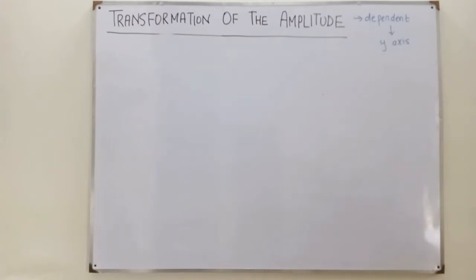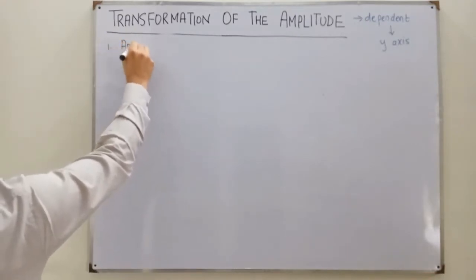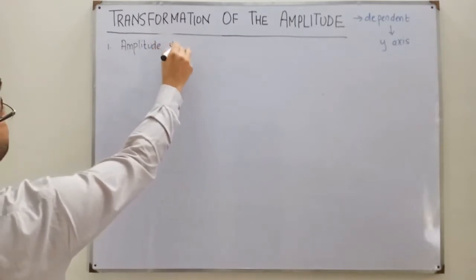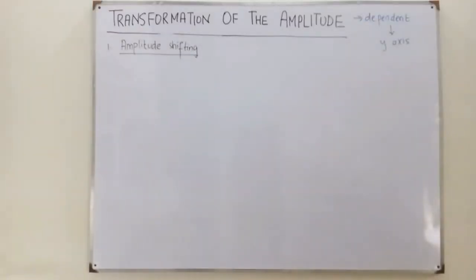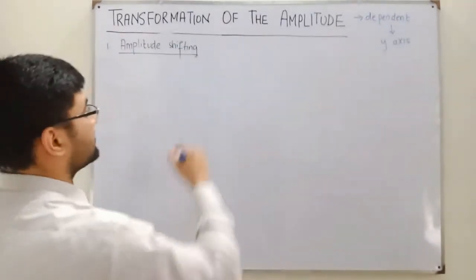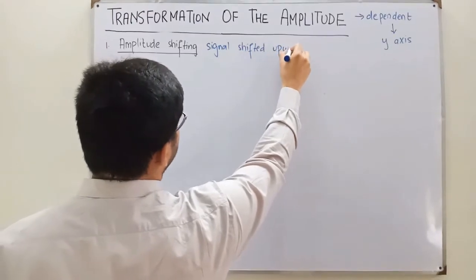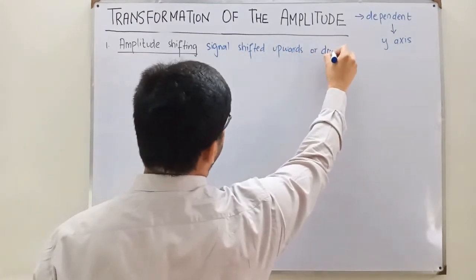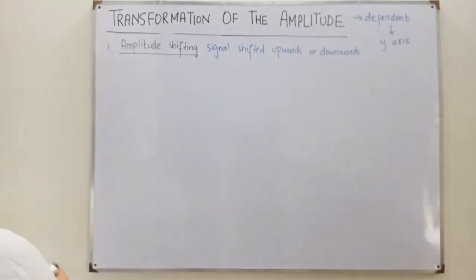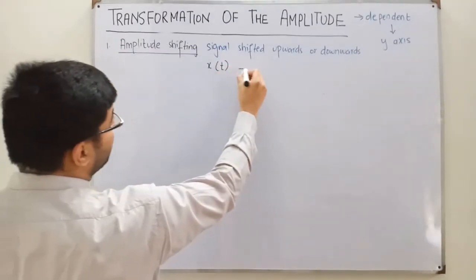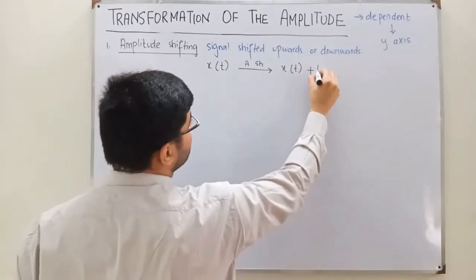The first is amplitude shifting. Amplitude is along the y-axis, and shifting will also be along the y-axis, so the signal would either be shifted upwards or downwards. In generalized form, if you have a function x(t) and you apply amplitude shifting, you get a new function x(t) + k, where k is a constant.